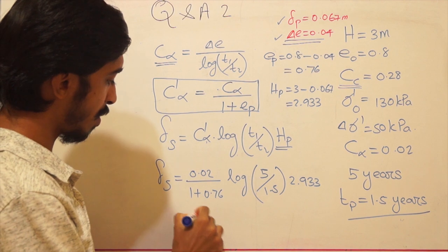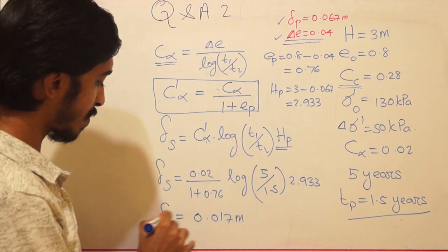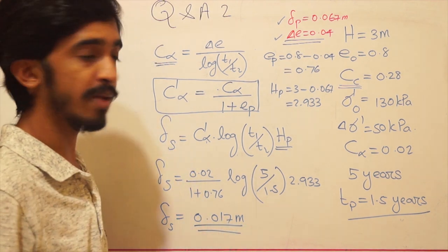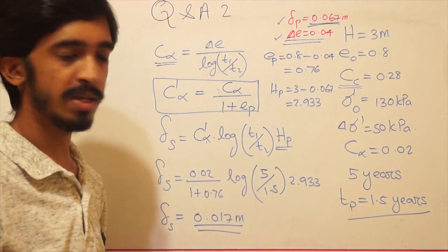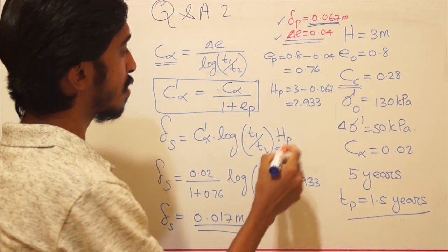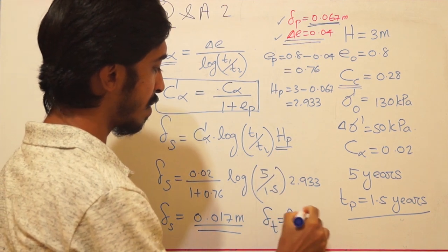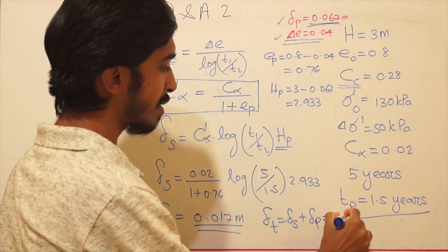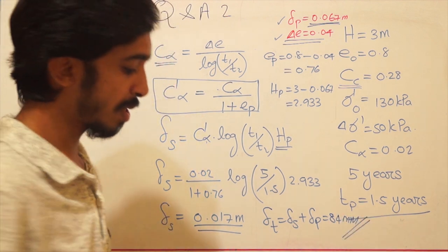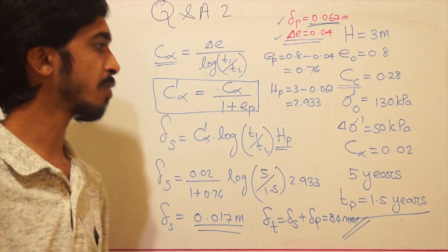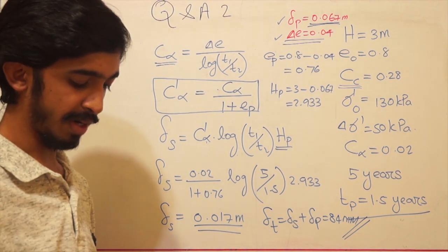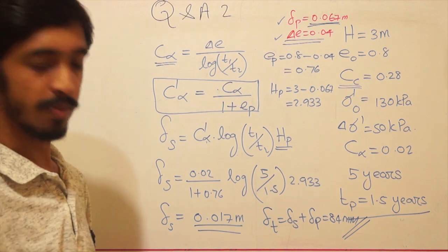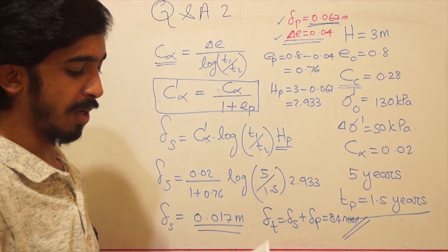The secondary consolidation settlement Δs = 0.017 meters. The total settlement is Δs + Δp = 0.017 + 0.067 = 0.084 meters, which is 84 millimeters. This question involves both primary and secondary consolidation settlement — a fairly straightforward calculation once you understand the concepts.